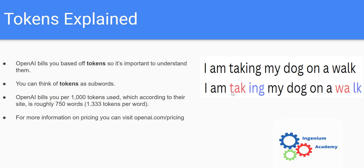To get an idea of what a token is and how OpenAI may actually tokenize a sentence — this isn't exactly how they would do it, but it's an example of what tokenization means — let's say you wanted to translate 'I am taking my dog on a walk' to Spanish. The sentence gets broken up into: 'I', 'am', 'take', 'ing'. Taking was split into two tokens because 'take' can be the prefix for a lot of words, and 'ing' covers many gerunds, so it may be wise for the model to separate these since they can match up with several different words.